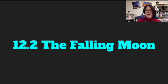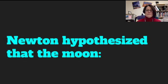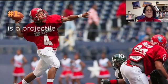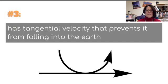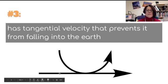Let's take a look at the falling moon. Newton hypothesized that the moon, number one, is a projectile, number two, is attracted to the earth, and three, has tangential velocity that prevents it from falling into the earth. If we take a look at this picture here,